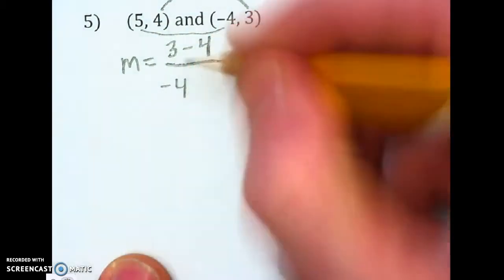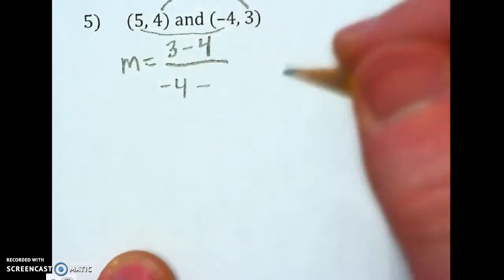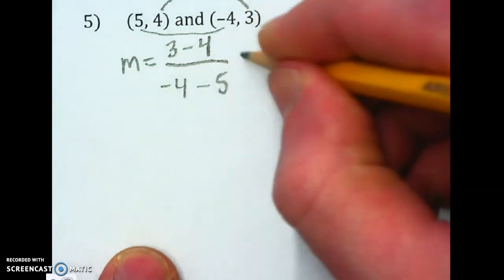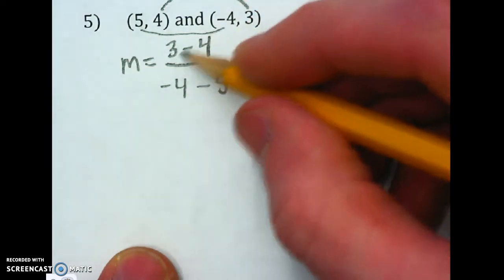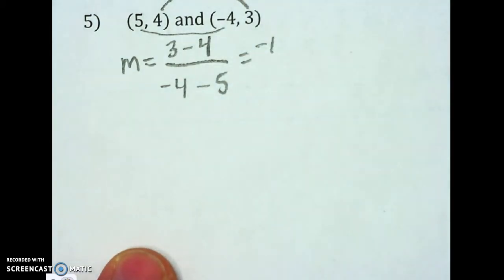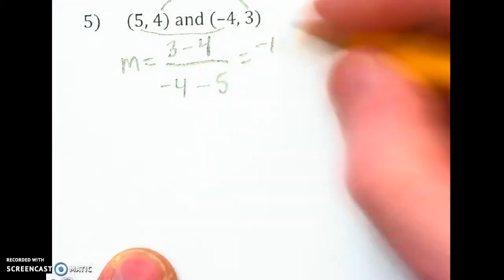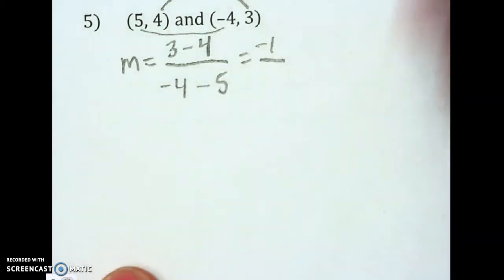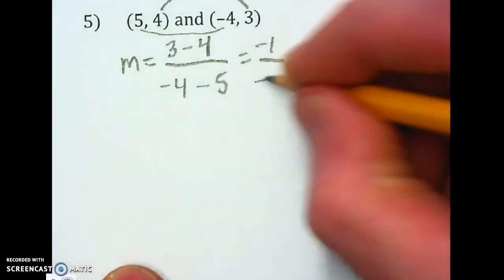Negative 4 minus 5. 3 minus 4 will get us negative 1. Negative 4 minus 5 will get an even bigger negative. That'll be negative 9.